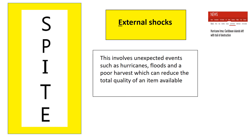Finally, let's take a look at external shocks. External shocks involve unexpected events such as hurricanes like Hurricane Irma, floods, and a poor harvest, which can reduce the total quantity of an item available. If there is an unexpected event, this would lead to an increase in the price of the good, meaning that production costs rise and firms reduce the amount they are willing to supply. Therefore there is a shift to the left on the supply curve.